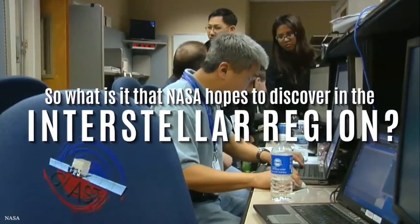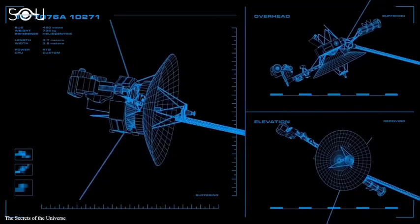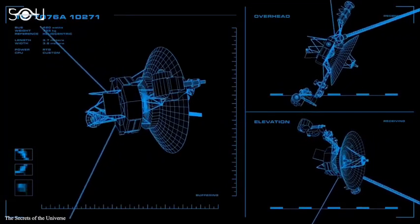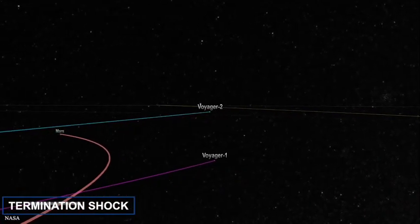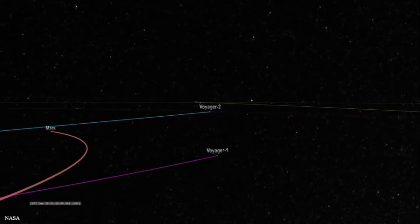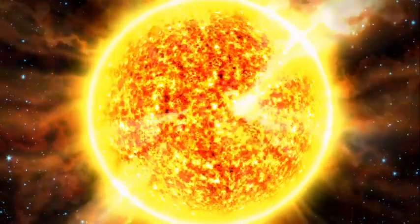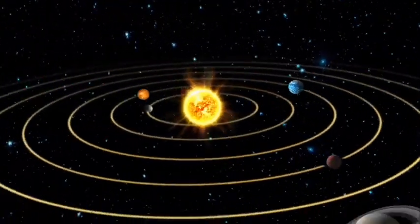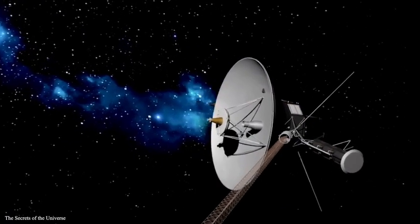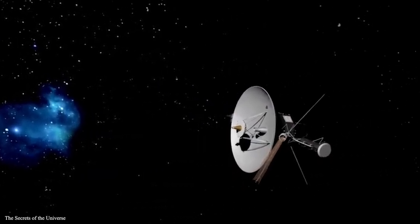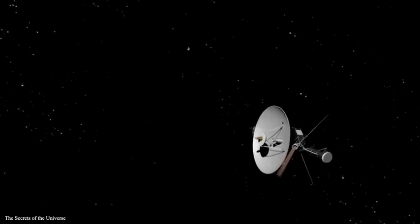So what is it that NASA hopes to discover in the interstellar region? The Voyager's interstellar mission is divided into three distinct phases. The first phase is called the termination shock. This defines the phase where the Voyager 1 is actually crossing the boundaries of the solar system. You could say that the solar system extends as far as the influence of the sun. Essentially, this means that this is the last part where the Voyagers have any influence of the sun's light, gravity, magnetic field, or solar wind.